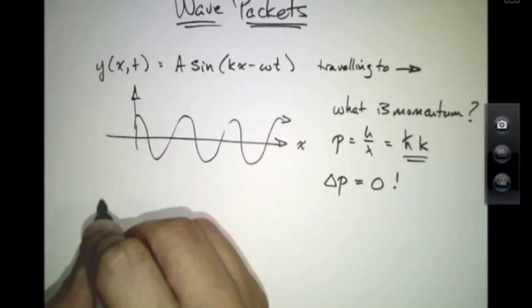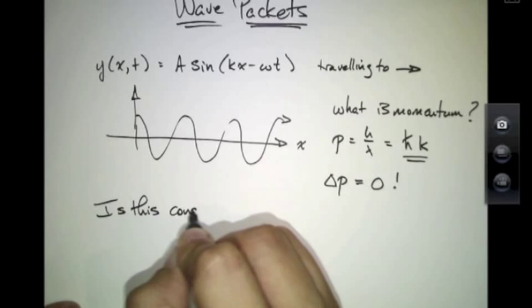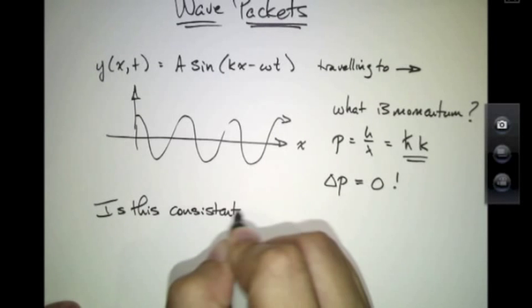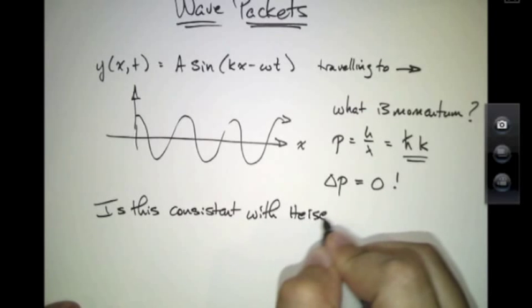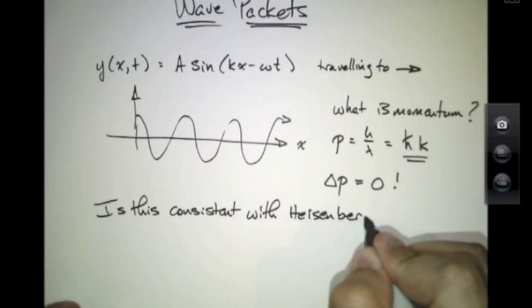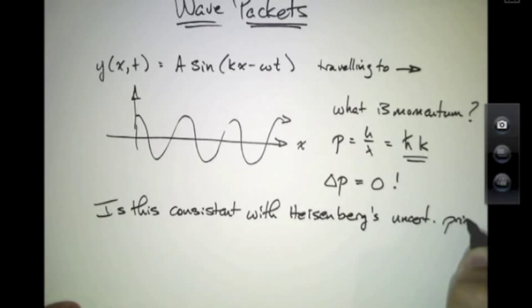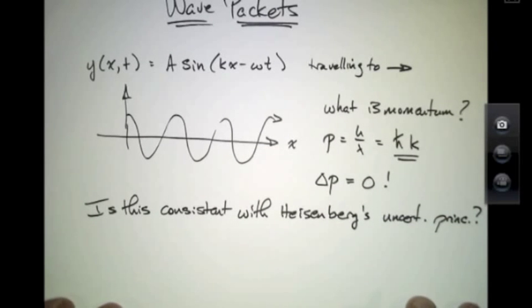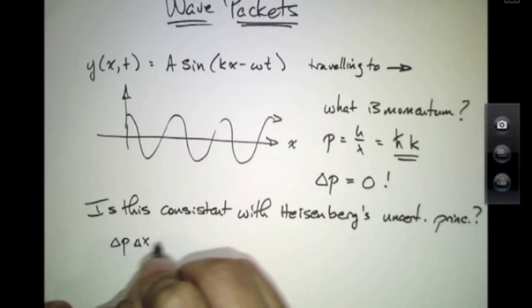And you can ask, is this consistent with Heisenberg's uncertainty principle? Well, in a sense it is. Because if you ask, is delta p delta x greater than h,